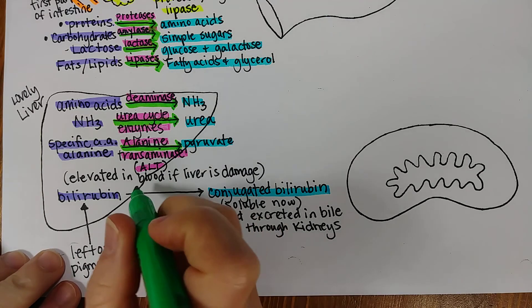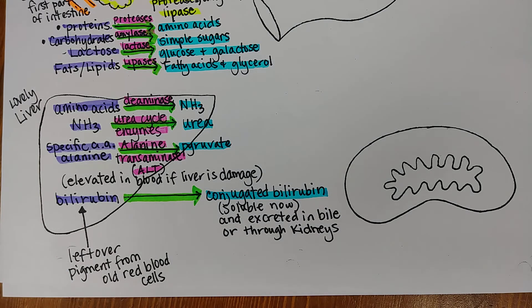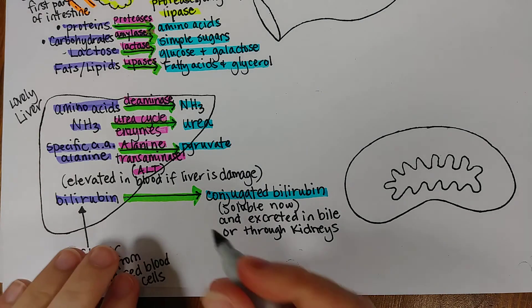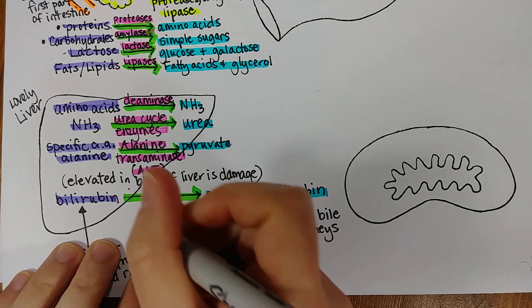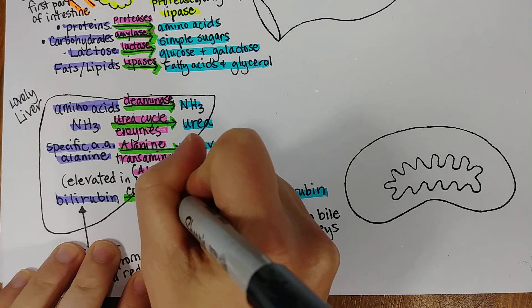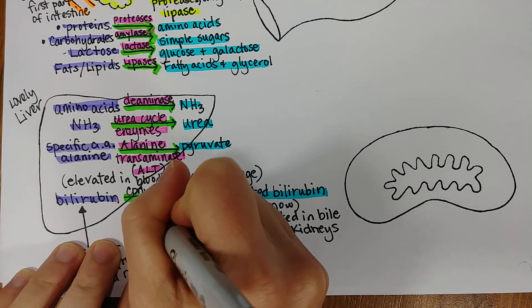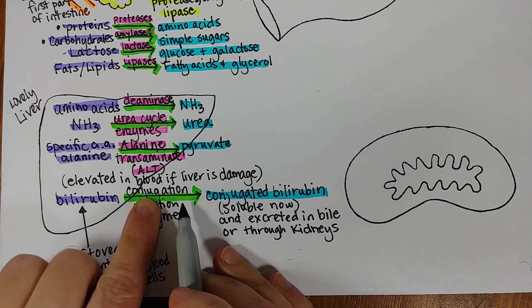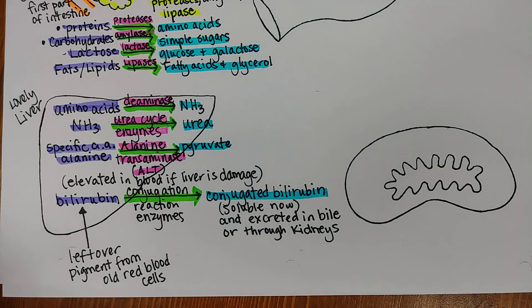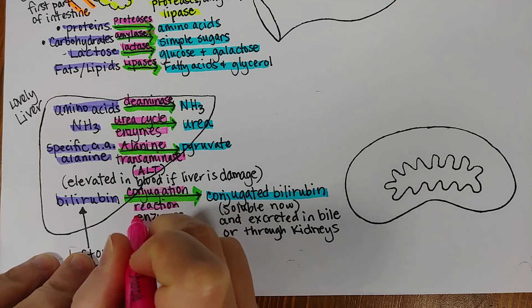This is a chemical reaction so we're going to put it in green and once again I'm not going to give you specific names but there are a variety of conjugation reaction enzymes. And again to tell you why this word conjugation is important, it means that the bilirubin has something added to it that is polar enough that it can be soluble in water.